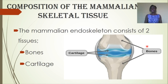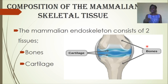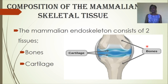Within the bone, you find some softer material. Sometimes, if the meat was not cooked well, you'll find it's a little bloody. That softer internal material is what we refer to as bone marrow, and this is where red blood cells are produced.